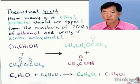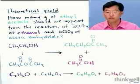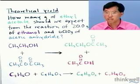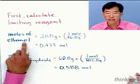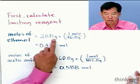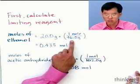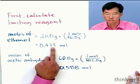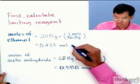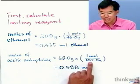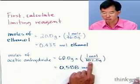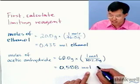So how do we approach this problem? Remember, to use the balanced reaction, things have to be in moles. In order to figure out how much stuff we're going to make, we first have to figure out what we're going to run out of first — that's a limiting reagent problem. We started with 20 grams of ethanol; the molar mass of ethanol is 46 g/mol, so we get 0.435 moles of ethanol. For acetic anhydride, we started with 60 grams; the molar mass is 102 g/mol, giving us 0.588 moles of acetic anhydride.